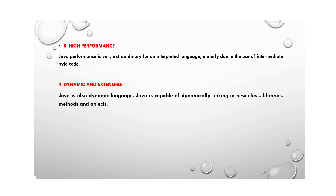Dynamic and extensible: Java is a dynamic language capable of dynamically linking new classes, libraries, methods, and objects. Java programming also supports functions written in other languages like C and C++, known as native methods — this is the extensible feature. So Java has two features: dynamic and extensible. These are all the features of Java: compiled and interpreted, platform independent and portable, object oriented, robust and secure, distributed, small and simple, multi-threaded and interactive, high performance, and dynamic and extensible.